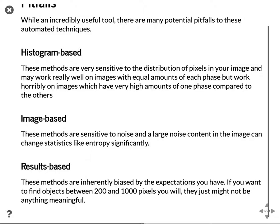Results-based methods are inherently biased by expectations. If you use a technique that expects to find objects between 200 and 1,000 pixels, you will in all likelihood find objects of that size even if they're not there — because the technique simply iterates and changes parameters until it finds that. This is particularly important when the results method is a deep neural network, because these are able to do even more complicated analyses and are very good at pretending they found something even when a visual inspection shows they're doing something completely nonsensical.